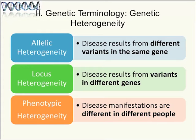Phenotypic heterogeneity means that disease manifestations are different in different people. In the hypochondroplasia case, the father is of normal intelligence, and we presume he also has hypochondroplasia but was never diagnosed. He has no intellectual disability, but his son does — that's phenotypic heterogeneity.